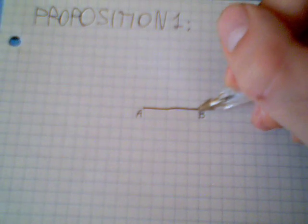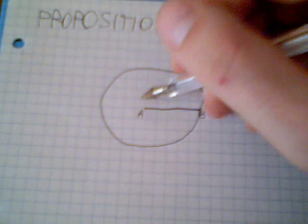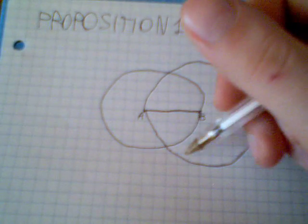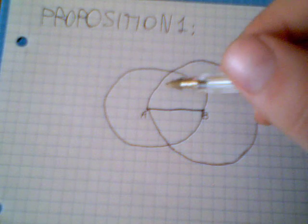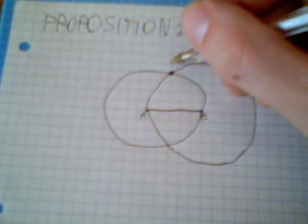I take A as a center and AB as a radius and I draw a circle. And then I take B as a center and BA as a radius and draw another circle. It's an awful drawing but I hope you will understand. Then I will get one point C.